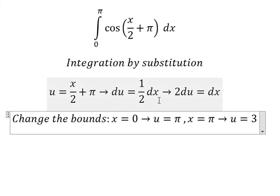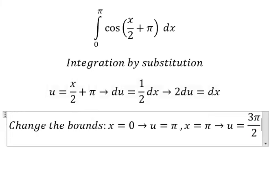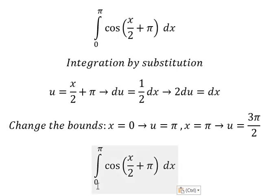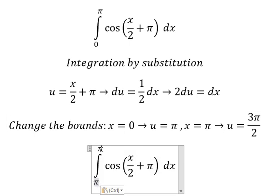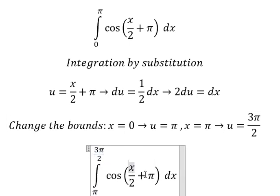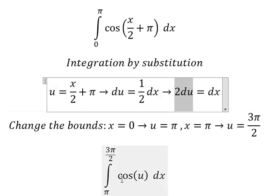So u equals 3π over 2. Now zero we change to π and π we change to 3π over 2. This x we change to u, and dx we change to 2du.